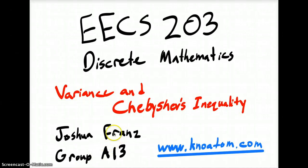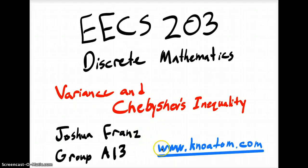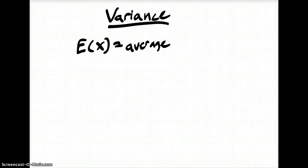Hello, this is Josh Franz again with another discrete mathematics video for IECS 203 at the University of Michigan. Today I'll be talking about variance and Chebyshev's inequality, a member of group A13. And if you'd like to see more videos like this, visit this website right here.